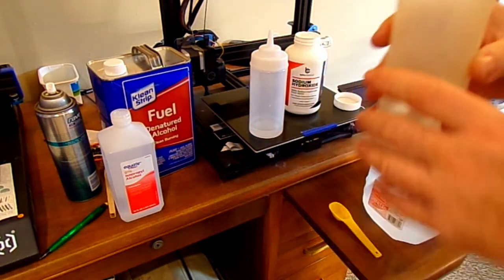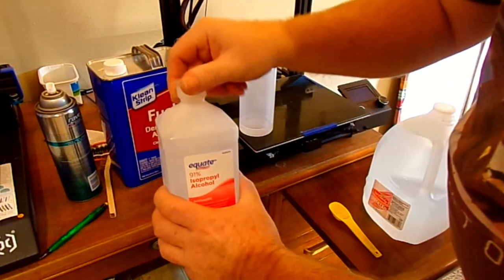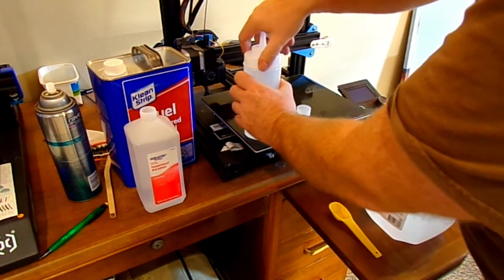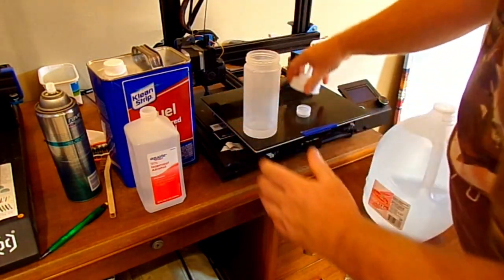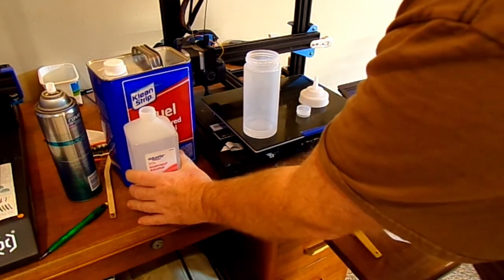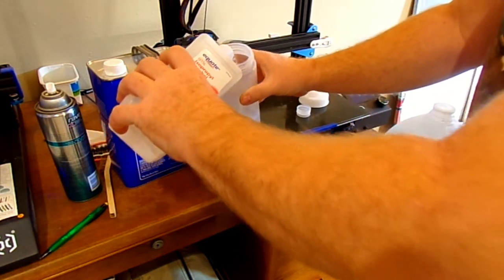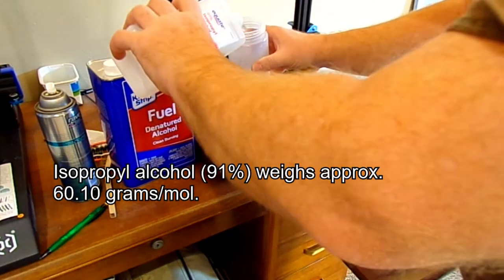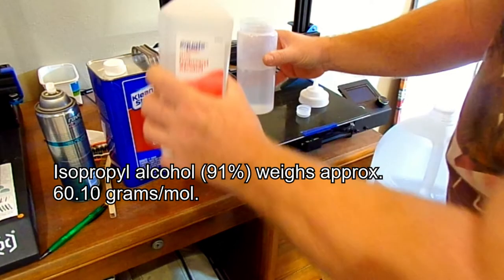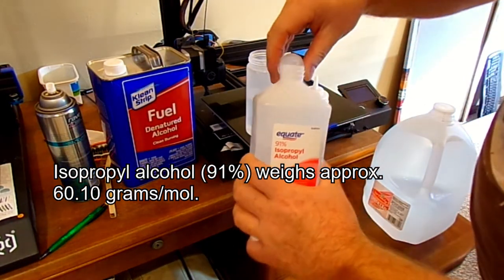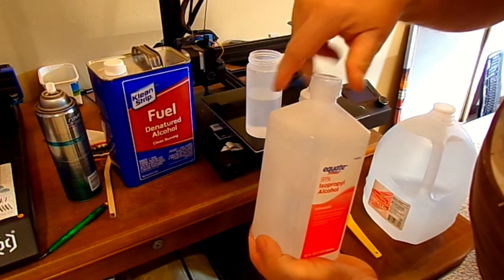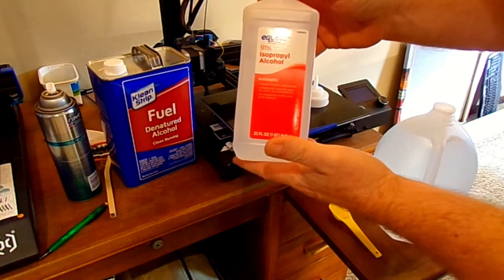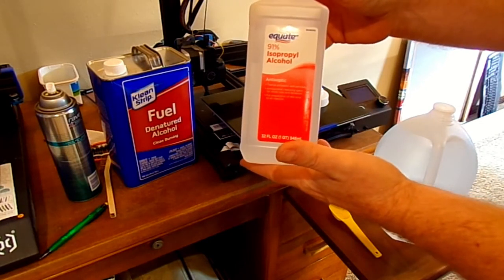The next step is to add alcohol. This is isopropyl alcohol, and we're going to fill this up to about 50 percent. Definitely pungent, that's from Walmart, 91 percent, and that's about a buck for that.